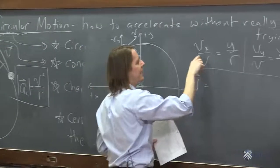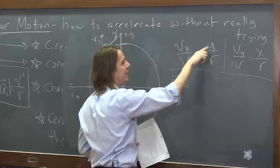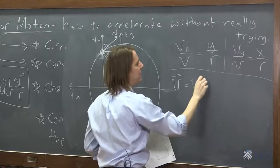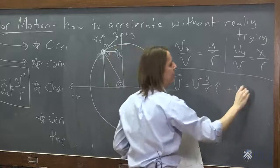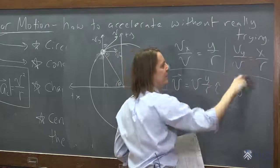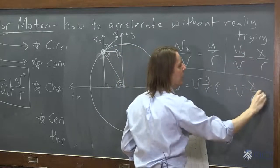Let's see. So we could say that the x component is v times y over r times i hat, plus the vy component is v times x over r, j hat.